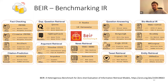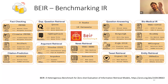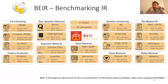One benchmark we worked on last year is the BEIR benchmark, benchmarking IR. Before that, a lot of people had been using embedding approaches to do in-domain information retrieval — take a model, have training data for it, train the embedding model, and then use it for search. But I found it a lot more interesting to do out-of-domain information retrieval, where you take a pre-trained model and apply it to some other domain or search setting. In BEIR, we collected a lot of different tasks and datasets.